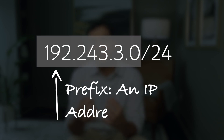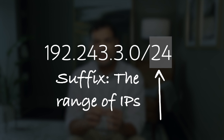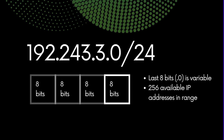Consider the CIDR block 192.243.3.0/24. The prefix 192.243.3.0 is the IP address. The suffix 24 indicates both the range of IPs and the number available. In this case, the first 24 bits or three octets are static, and the last 8 bits are variable — that's what can change. That offers us a range of 0 to 255.